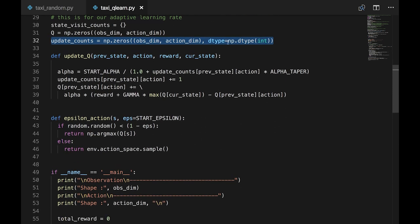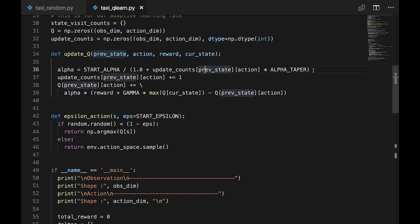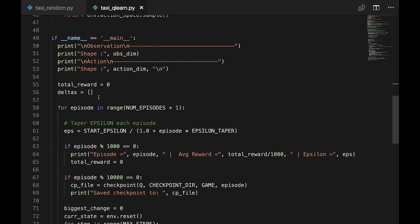The updateQ function is the heart of our algorithm. First, we taper the alpha based on how many times we've previously visited the given state action pair. Then, we add a visit to our updateCounts table for the previous state and action. Finally, we apply the temporal difference equation to update our Q table for the previous state and action. Note we multiply gamma by the argmax to find the highest Q value among all actions for the state prime. We subtract the Q value of our previous state and action. Everything is multiplied by alpha before it's added to the existing Q of S and A.